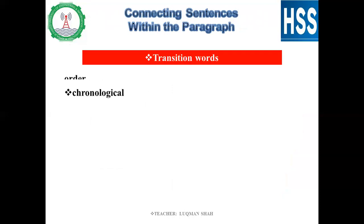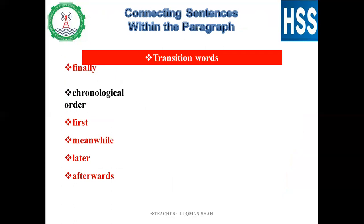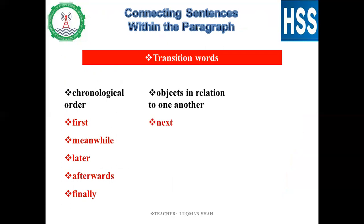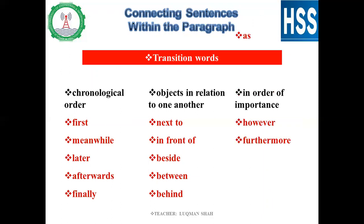Look at the transition words used for coherence. In chronological order we use words like: first, later on, afterwards, and finally. For objects in relation to each other: next to this, in front of, beside, between, behind, near to it. For order of importance we use: however, furthermore, as a result, in fact. These are all words which clarify logical order and establish coherence.